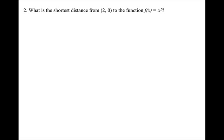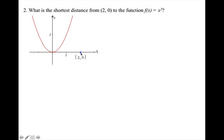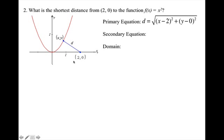What is the shortest distance from the point (2, 0) to the function f(x) equals x squared? Drawing a picture, we have our parabola x squared, and we want to know the shortest distance from that point to some point x comma y on the graph. My primary equation is going to be the distance formula — basically the Pythagorean theorem. My secondary equation is that y equals x squared, which is the y value on the graph I'm going to.